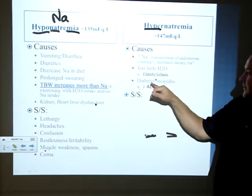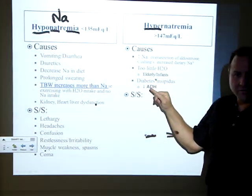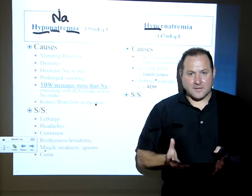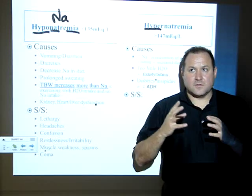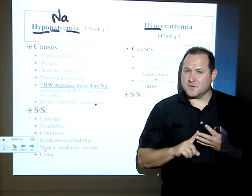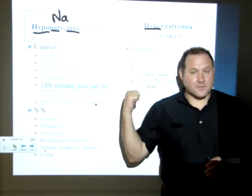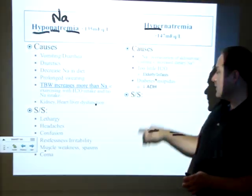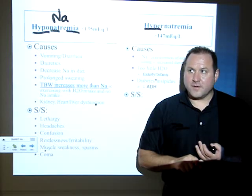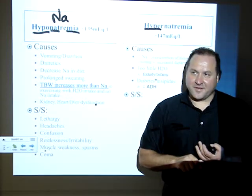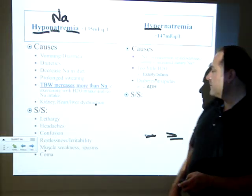Diabetes insipidus is also related to hypernatremia. It has nothing to do with diabetes mellitus — type 1, type 2, or gestational. Don't confuse them. Diabetes insipidus is specifically caused by decreased ADH — decreased anti-diuretic hormone.